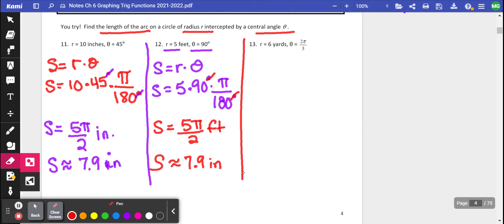And this last one, we're actually giving you the angle in radians. So it's going to be a little bit easier because you don't have to do the conversion. We have 6 times 2π over 3. That is radians, so we don't have to do the conversion. I would go ahead and do this simplifying ahead of time. We get a final answer of 4π yards, which if you do 4 times 3.14, you get about 12.6 yards.